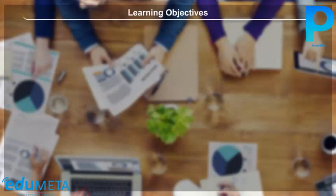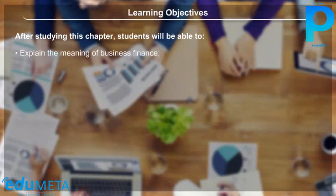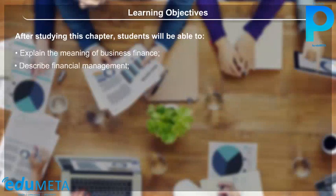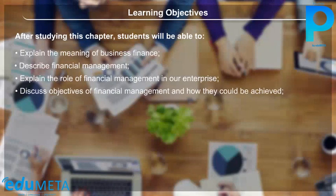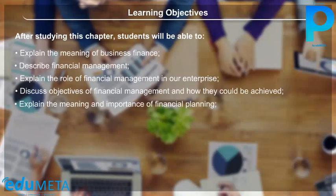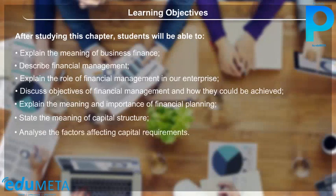Learning Objectives: After studying this chapter, students will be able to explain the meaning of business finance, describe financial management, explain the role of financial management in an enterprise, discuss objectives of financial management and how they could be achieved, explain the meaning and importance of financial planning, state the meaning of capital structure, and analyse the factors affecting capital requirements.